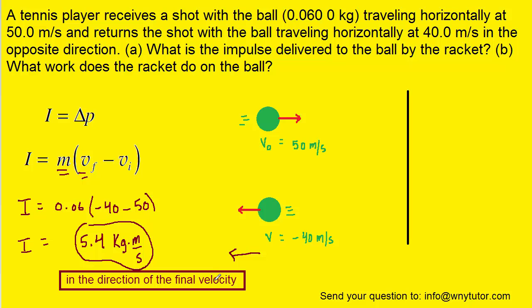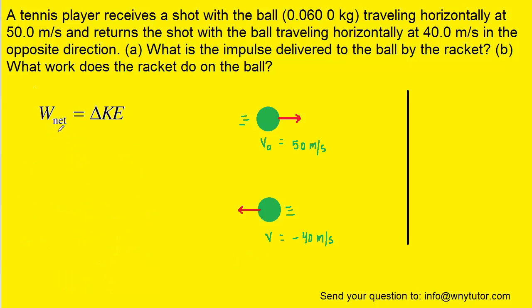We can move on to part B now. We can use the work kinetic energy theorem, where we know that the work is equal to the change in kinetic energy of the tennis ball. We can replace the change in kinetic energy with the following expression. This expression for the change in kinetic energy was probably learned in a previous chapter.